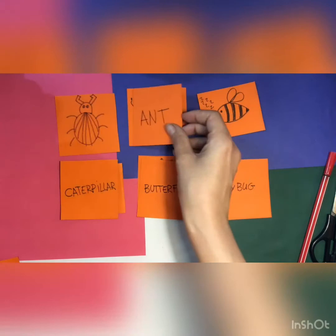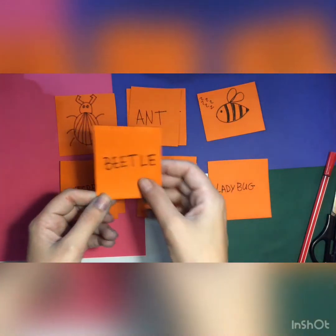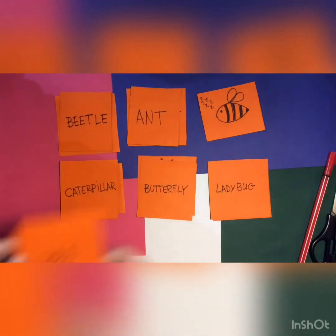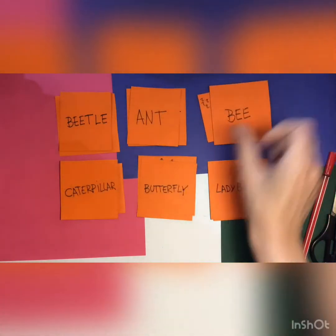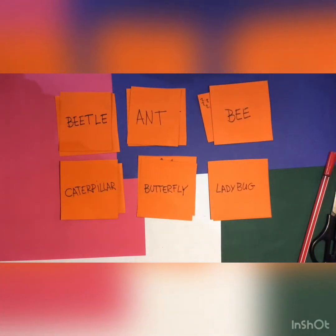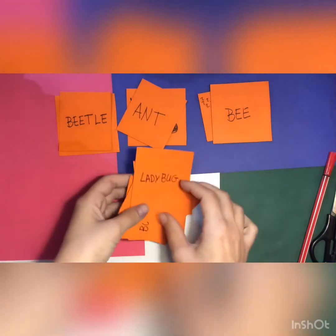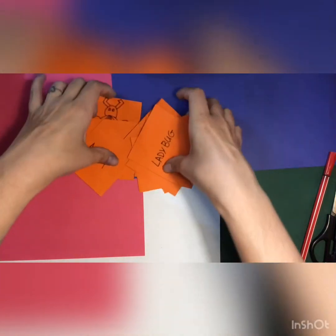Ant. Here. Beetle. Here. And bee. Here. Now that you have all of the pieces, you just need to mix them together. And then you can play.